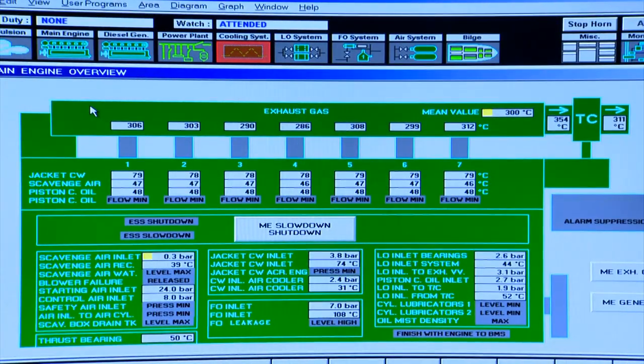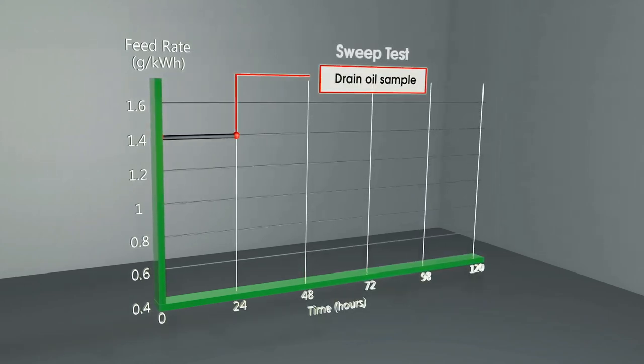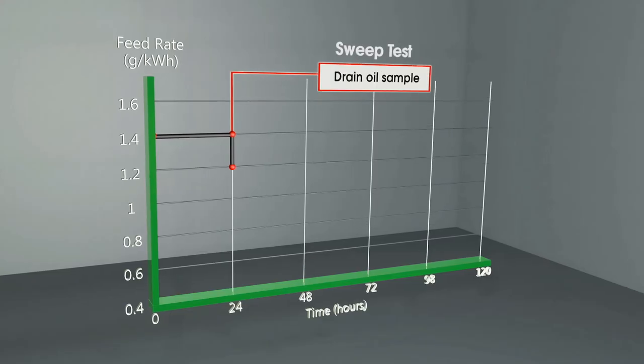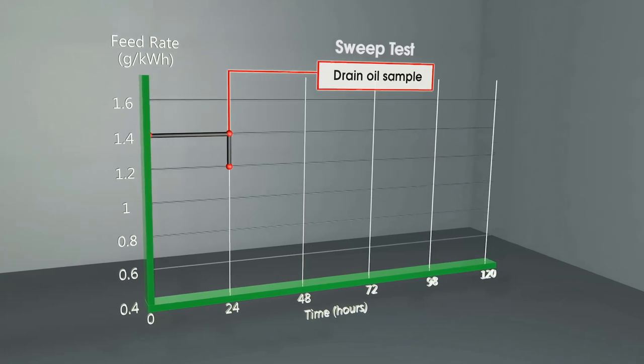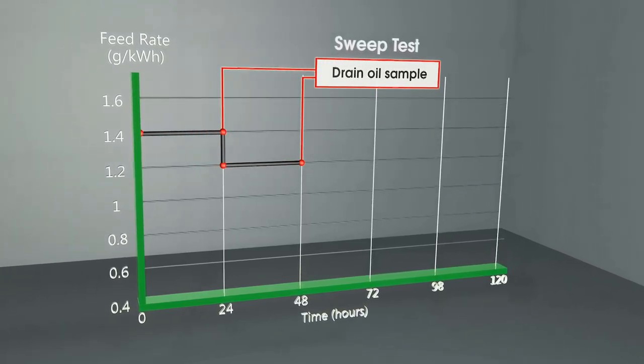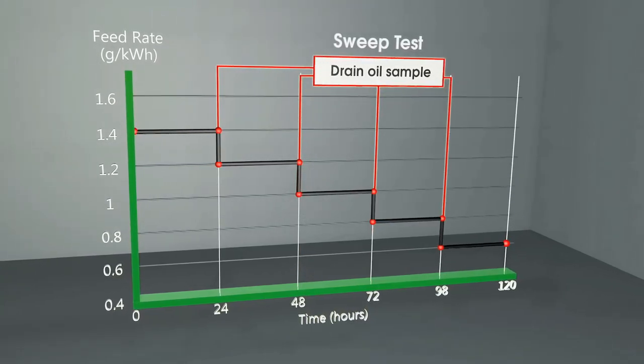Step-wise, you start at a high feed rate with a constant engine load. After 24 hours, take samples and analyze them on board, dropping the feed rate down by 0.2 grams per kilowatt hour. Repeat the test for another 24 hours, continuing down to the minimum feed rate allowable by the engine manufacturers.